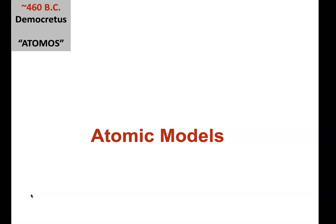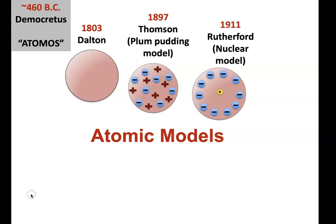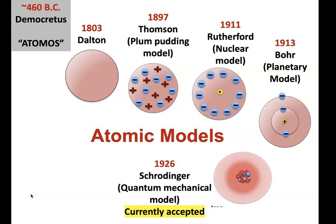The first atomic theory — really the first idea of the atom — was proposed by Democritus, a Greek philosopher, in 460 BC. The first scientific model was from John Dalton in the early 1800s, and there were several other models leading to the final one in 1926 by Erwin Schrödinger, which is the accepted version of the atom as of today.